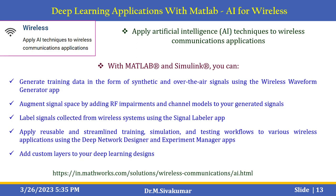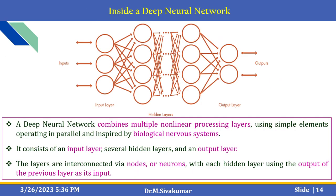Inside a deep neural network, there are input layers, hidden layers, and output layers. A deep neural network combines multiple non-linear processing layers using simple elements operating in parallel, inspired by biological nervous systems. The layers are interconnected via nodes or neurons, with each hidden layer using the output of the previous layer as its input.